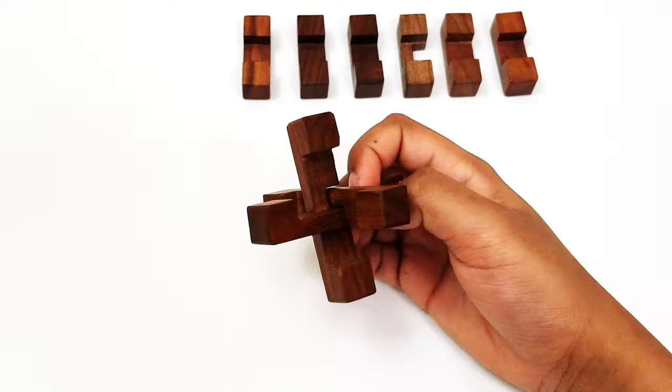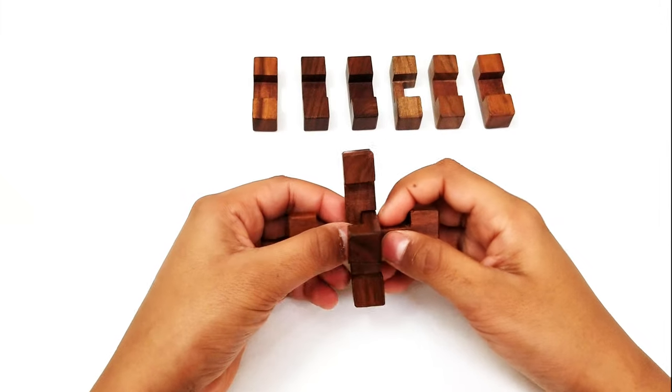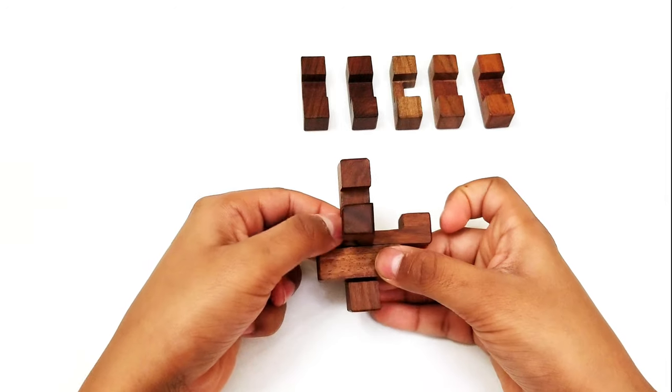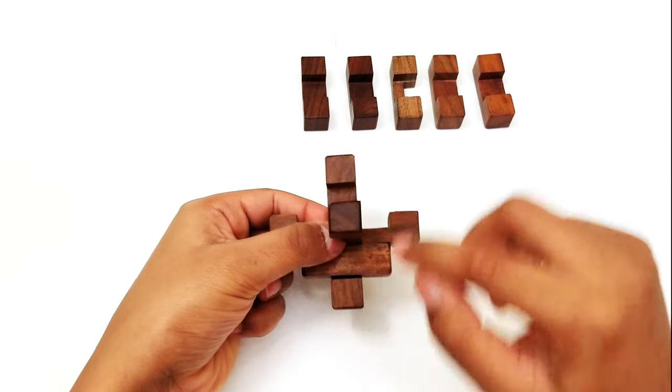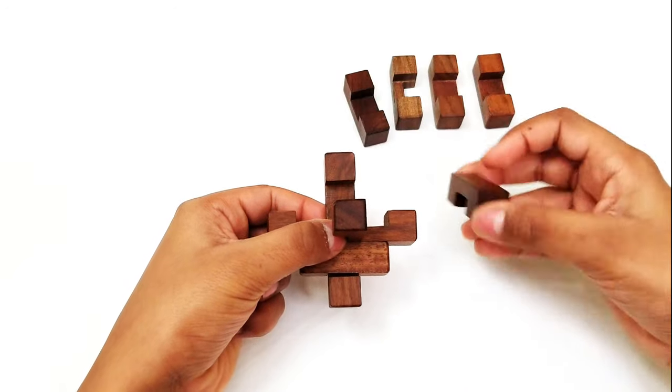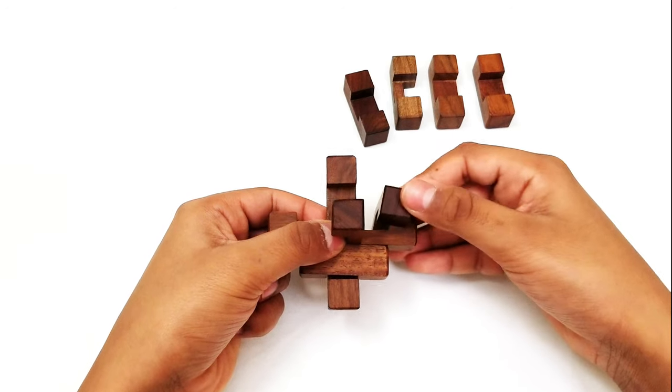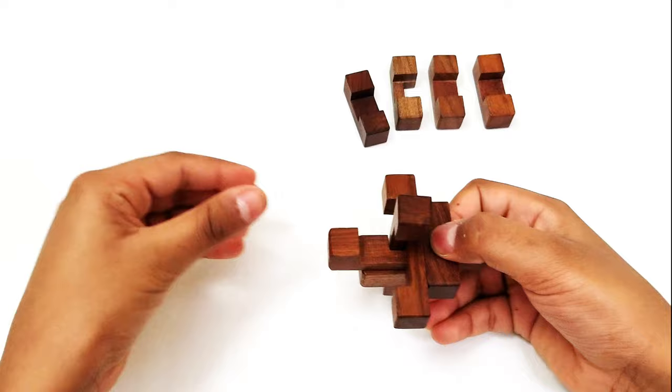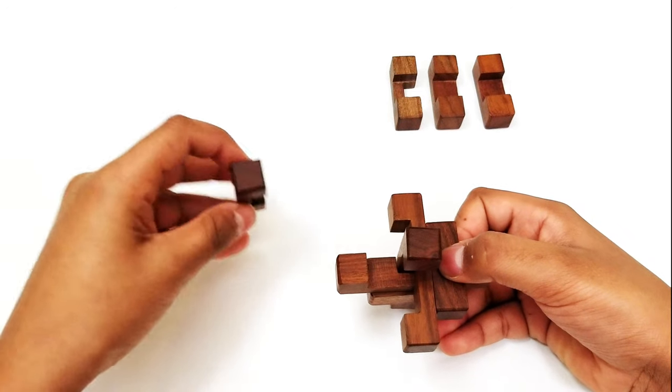Then take one of these pieces and slide it from the bottom like this. Then take another piece and from the right slide it in. Now take this piece and from the left slide it in to the back.